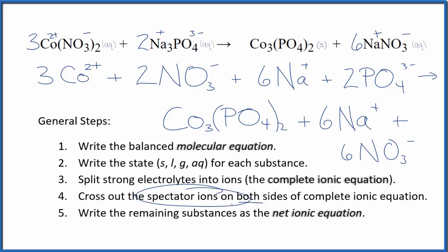Now we'll cross out spectator ions, they're on both sides. So as I look at the reactants, I see I have 2 nitrate ions here and 6 here, which seems kind of odd. And I can see 2 times 3, that should be 6. So I need to change this 2 to a 6, that's a mistake.